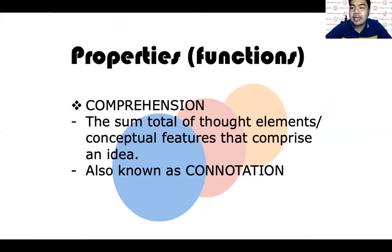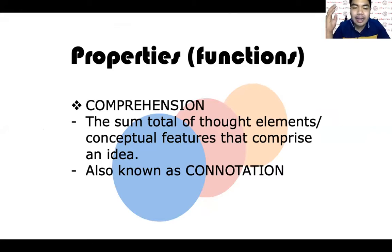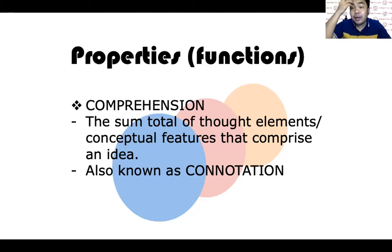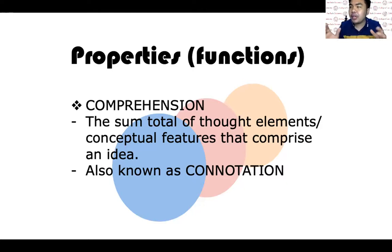The first property of ideas is comprehension. What is comprehension? Comprehension is the sum total of thought elements or conceptual features that comprise an idea. It is also known as the connotation. Comprehension is the way we describe things — it is the sum total of all the elements of things.